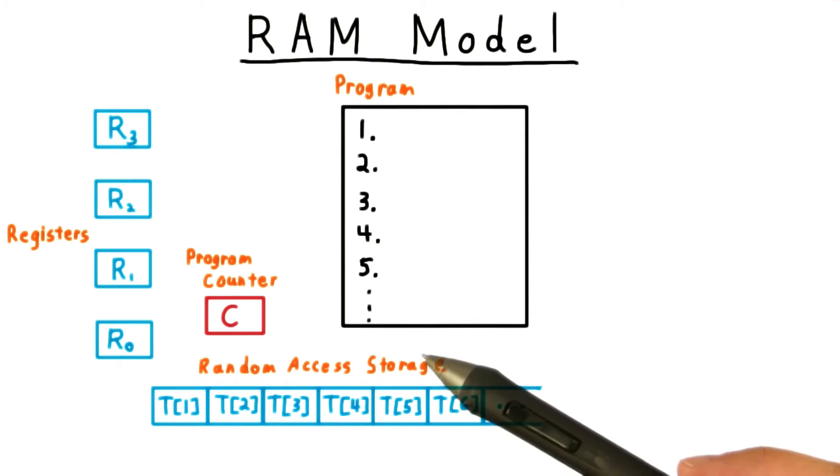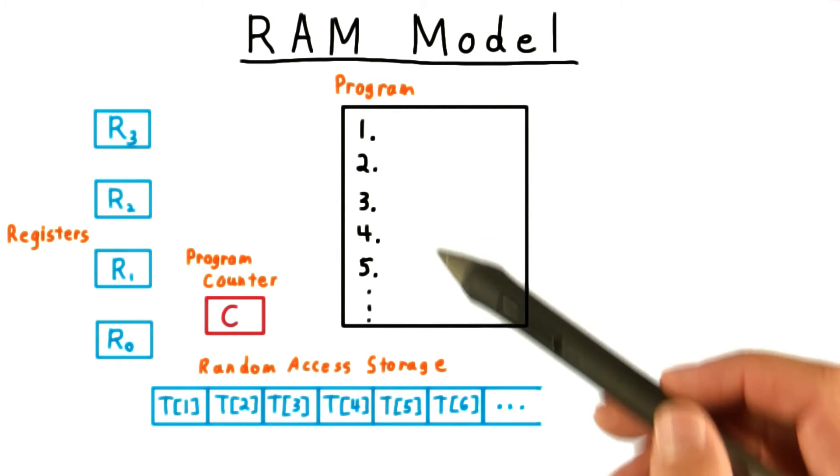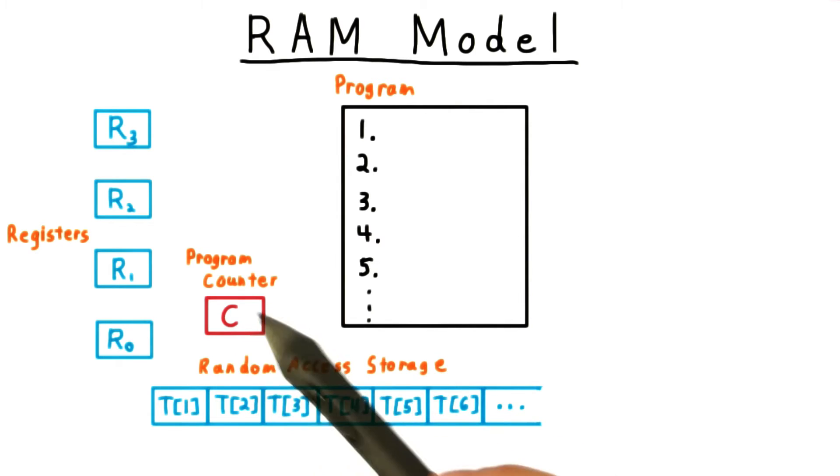In addition to this storage, the machine also contains the program itself, expressed as a sequence of instructions, and a special register called the program counter, which keeps track of which instruction should be executed next.